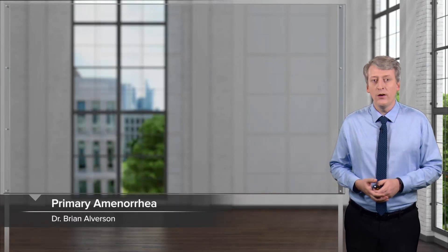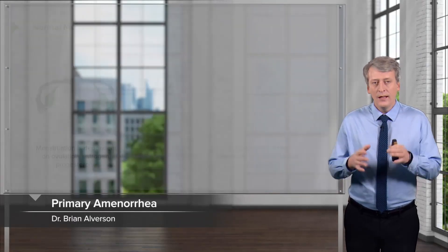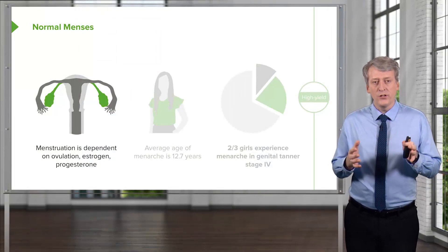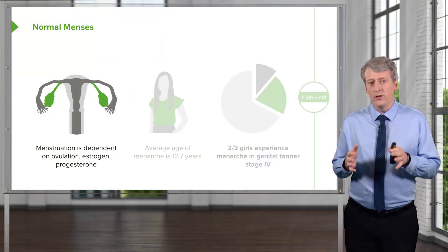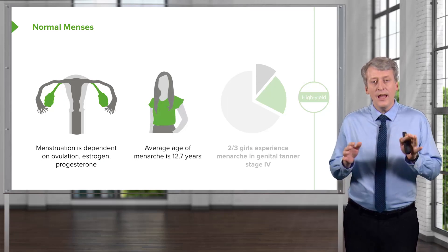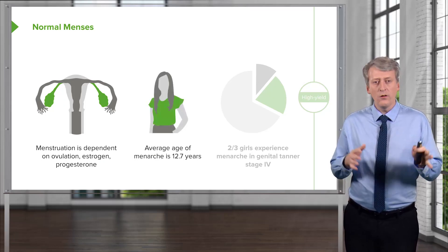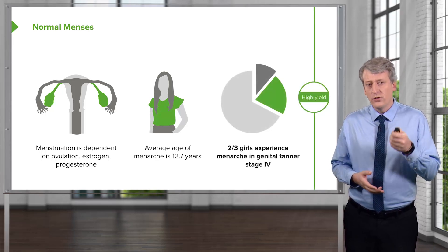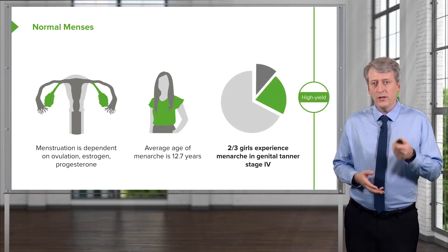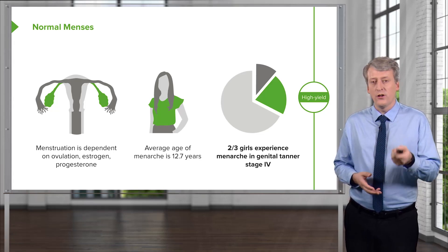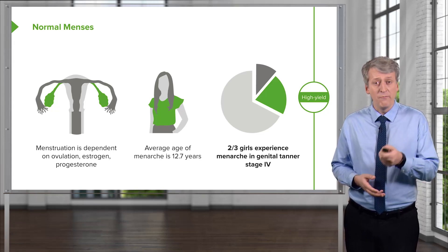In this lecture, we're going to discuss primary amenorrhea. Let's review the normal menstrual cycle. Menstruation is dependent on ovulation, estrogen, and progesterone. The average age of menarche is around 12.7 years, and two-thirds of girls experience menarche in the genital Tanner stage 4, not 5, but 4.